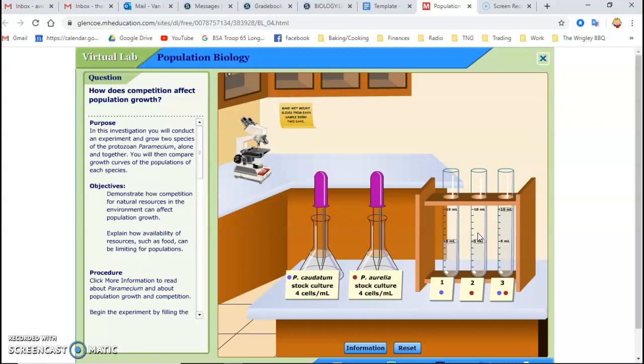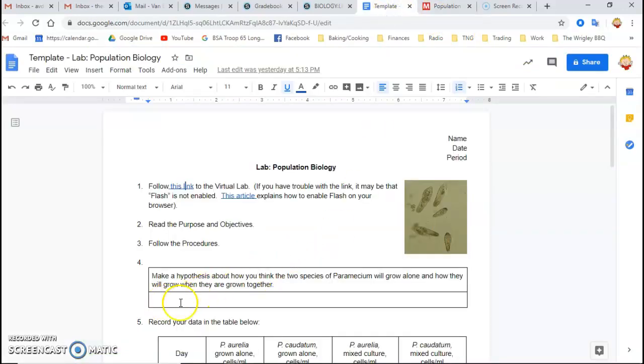And so that's what you're going to model in this lab. You're going to grow each population without competition. And so in your hypothesis, write down how you think those populations are going to grow. Are they going to grow exponentially without stopping? Or are they going to die off after a certain period and why?